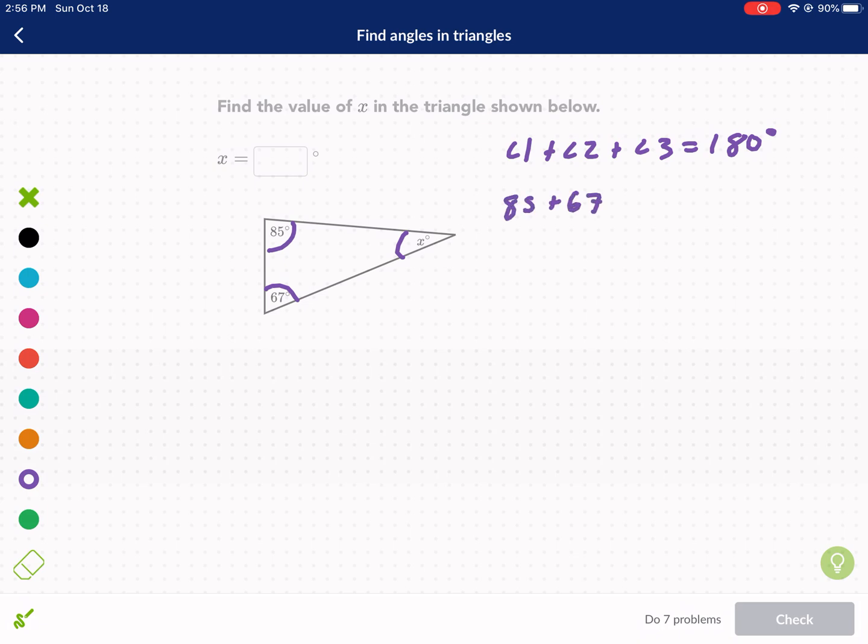So here we have 85 plus 67 plus our missing angle X equals 180. We simply need to do 180 minus those two angles, 85 and 67. We're going to subtract those from both sides, minus 85 minus 67. If you want, you can find the sum of those first, but I'm just doing minus 85 minus 67, and I get X equals 28.